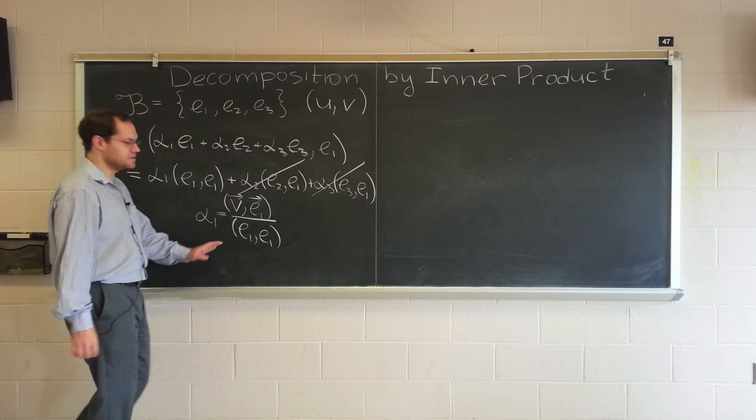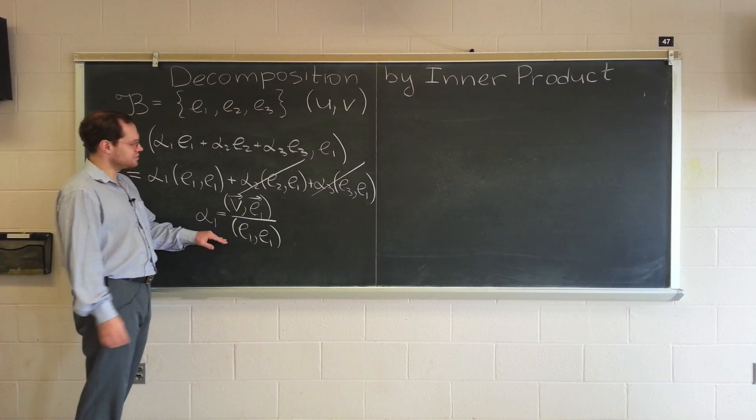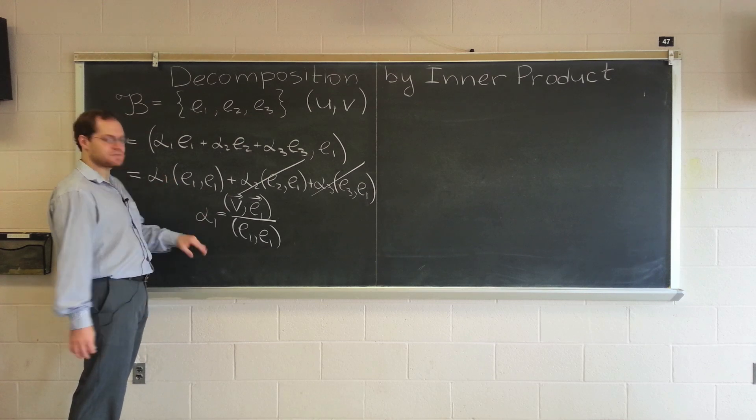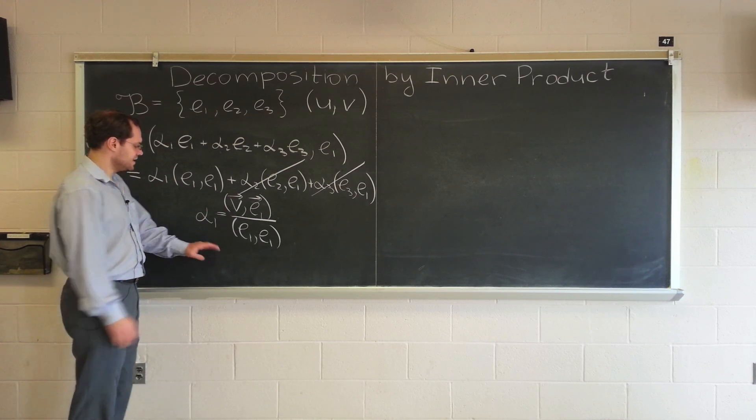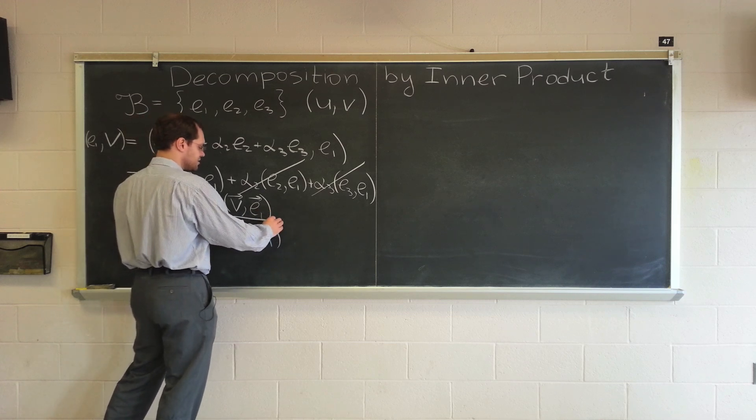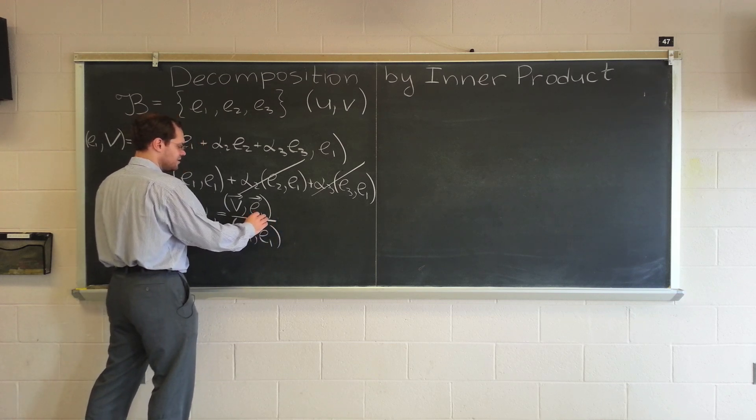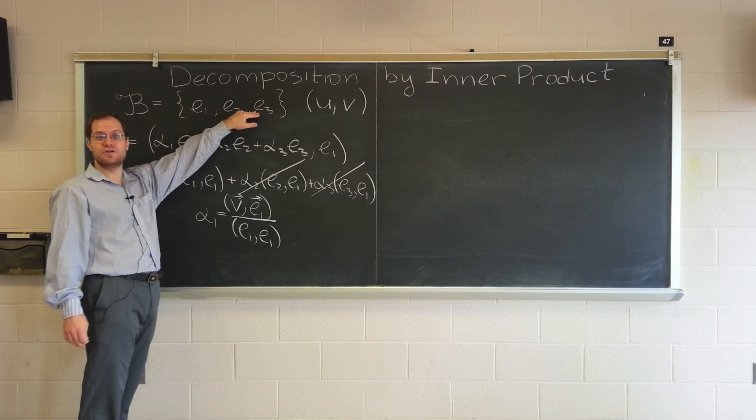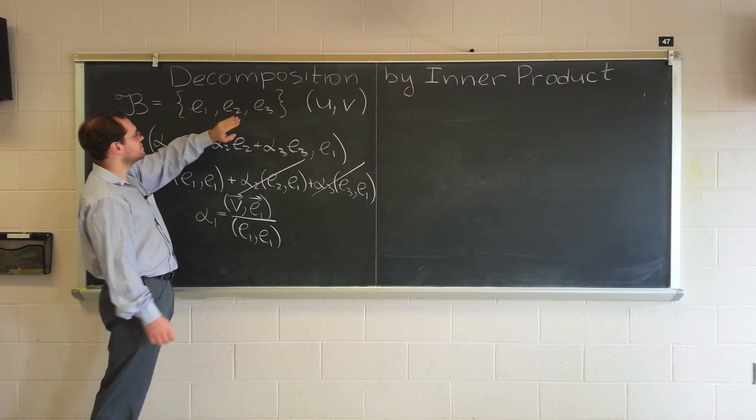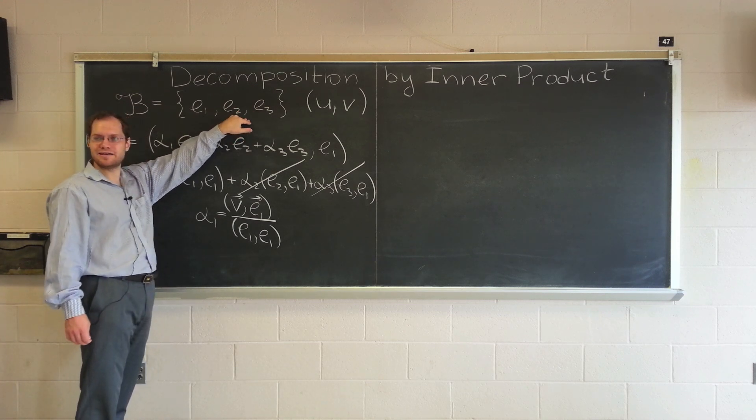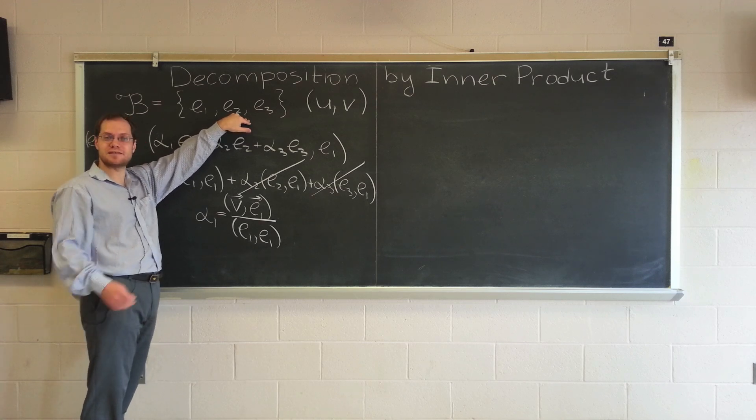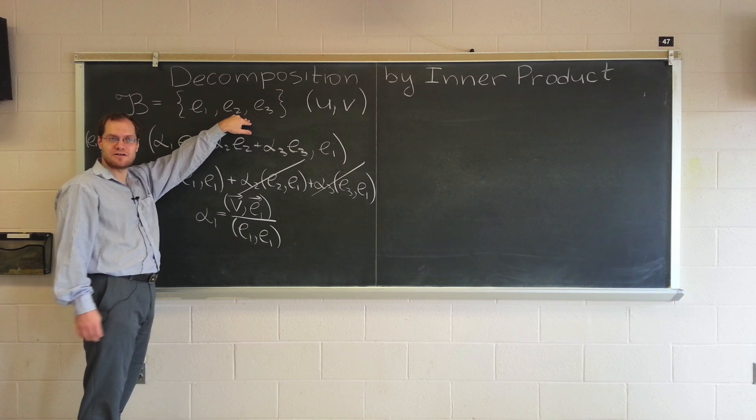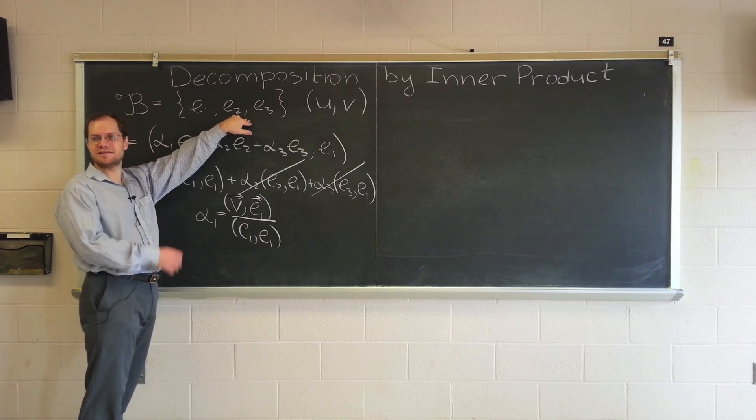This sometimes I even use as motivation for generalizing the inner product from geometric space to arbitrary linear spaces. Now let's take this formula in two different directions. Let's first consider an even more special basis, an orthonormal basis where these vectors are not only orthogonal but unit length. And then we'll ask ourselves what would happen if the basis is not orthogonal at all but a random basis. Can this technique still work?